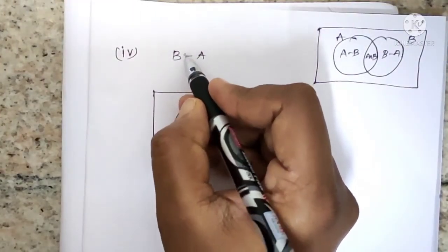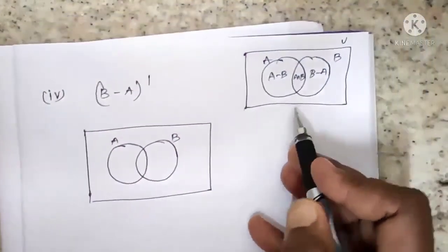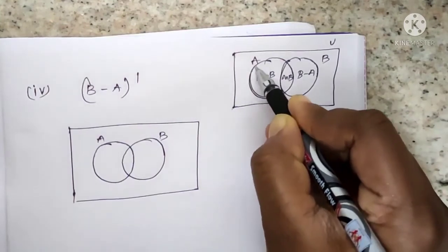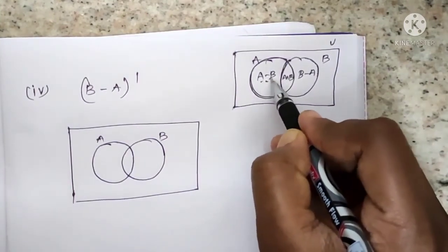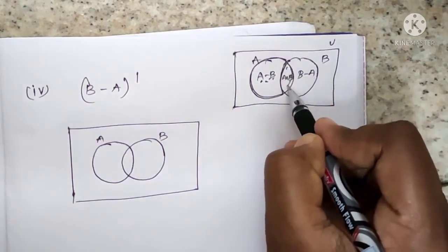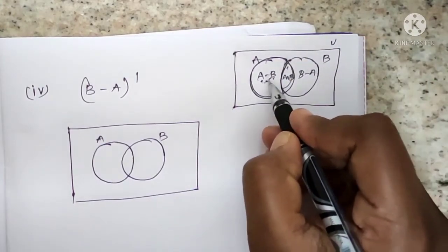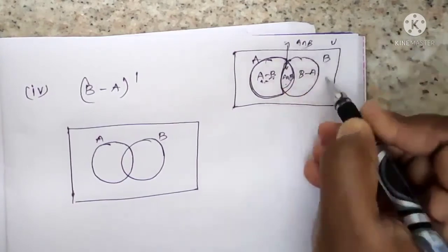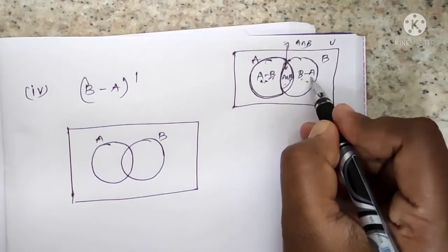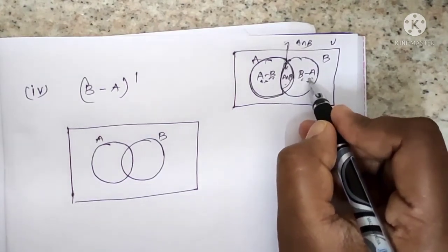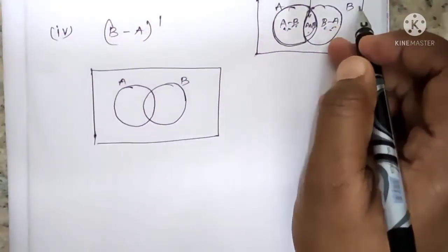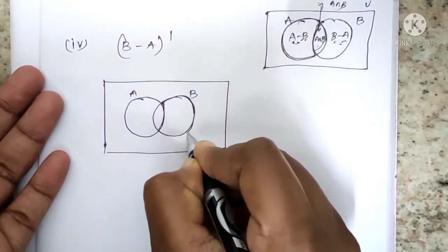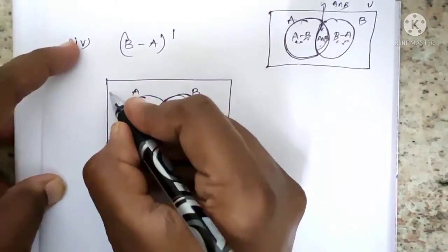The fourth subdivision is B minus A whole dash. B minus A is the part of B not in A. This purely B region is shaded; then B minus A whole dash is the complement of that.